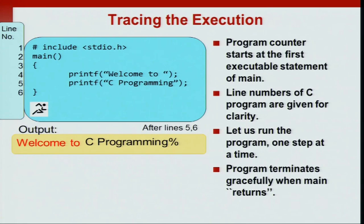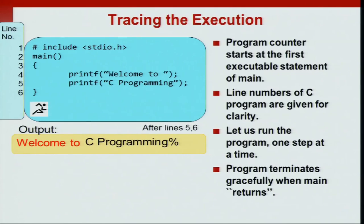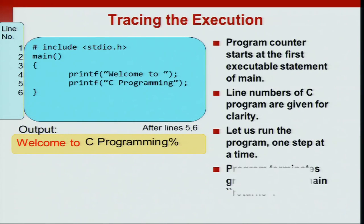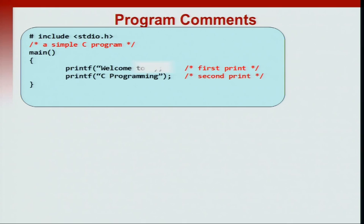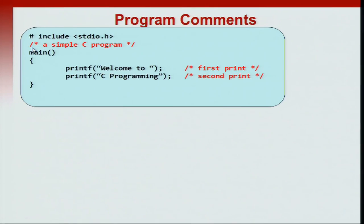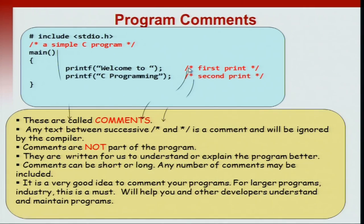The program terminates when main finishes execution, and this is what is typically known as returning from the function — we will see this terminology later in the course. When you code, in addition to the statements which are actually executed, you may also give a few additional remarks. These are what are known as program comments. For example, the lines 'a simple C program', 'first print', and 'second print' — these are the comments in the code.